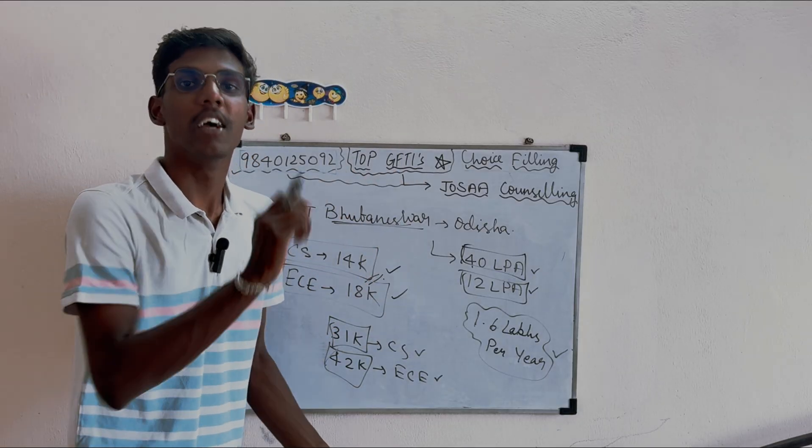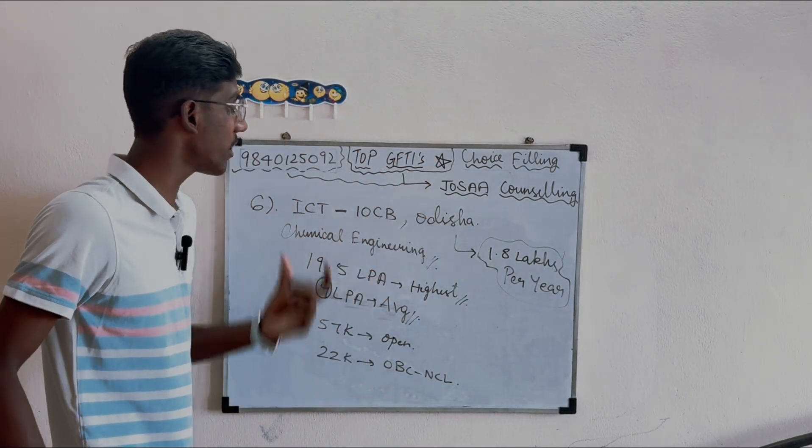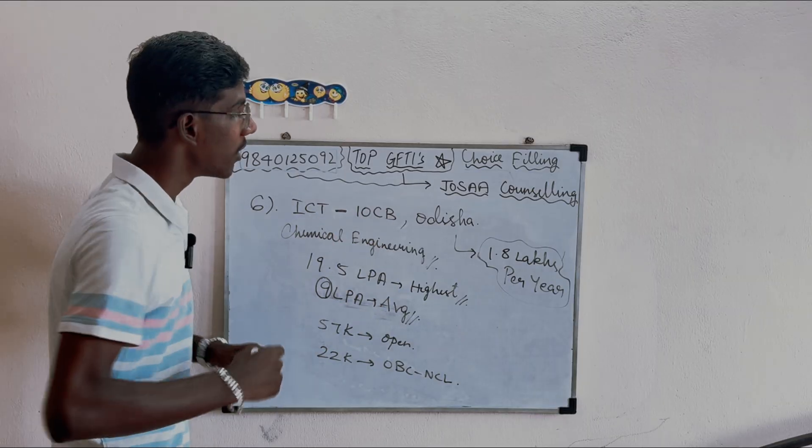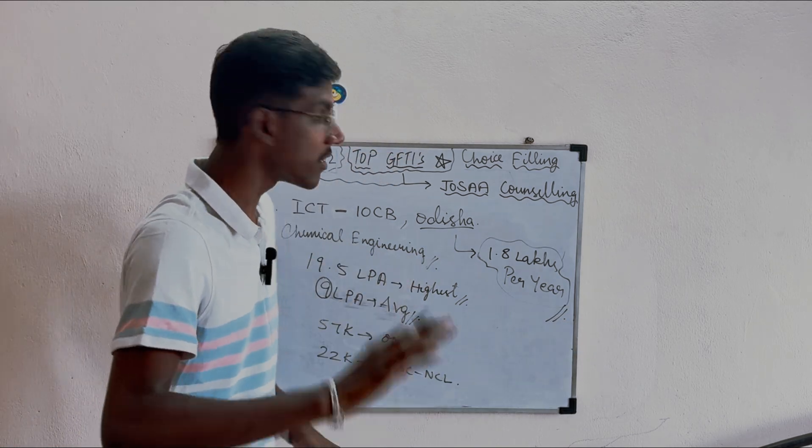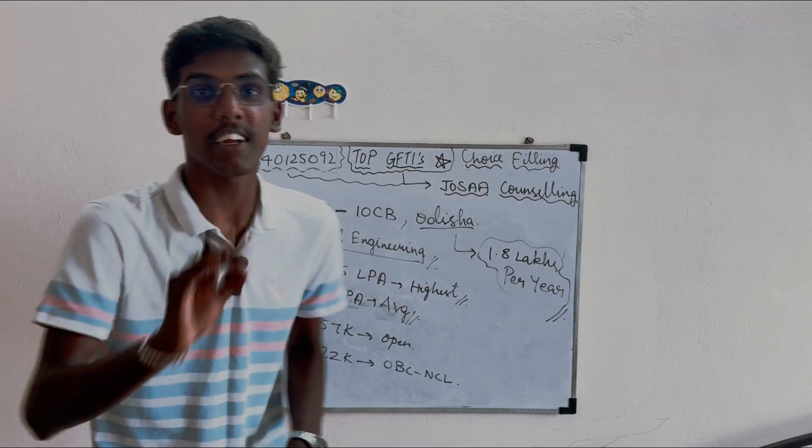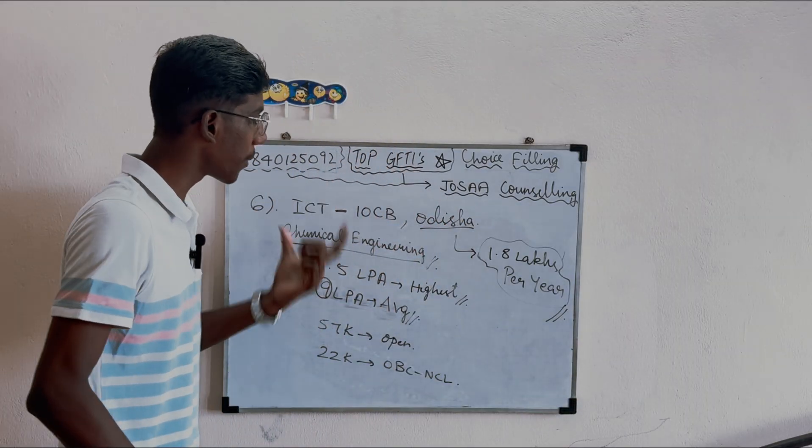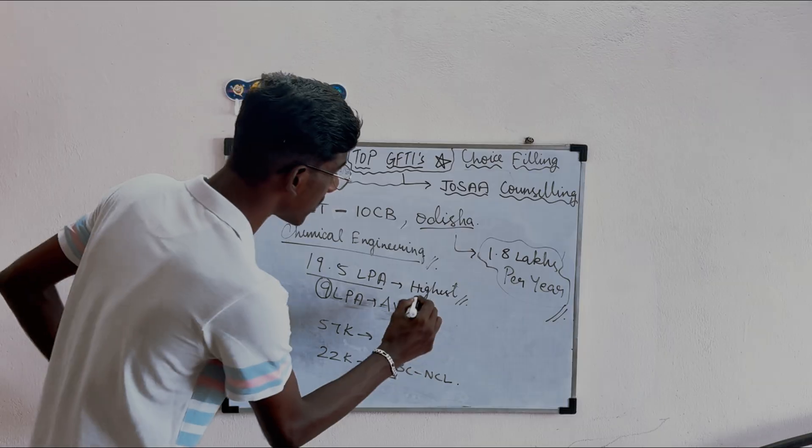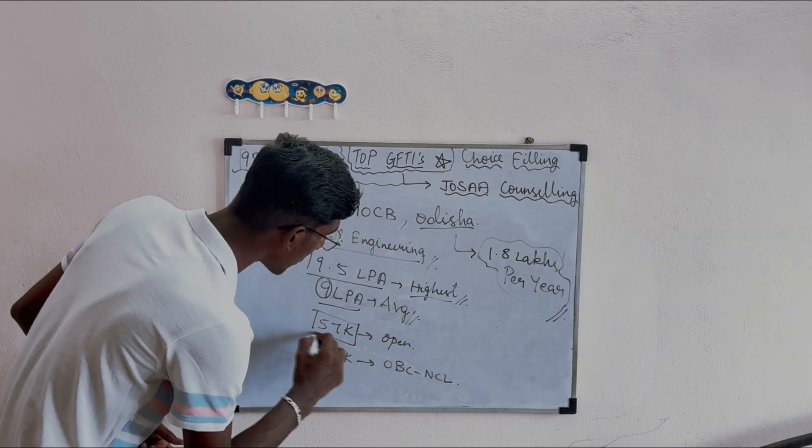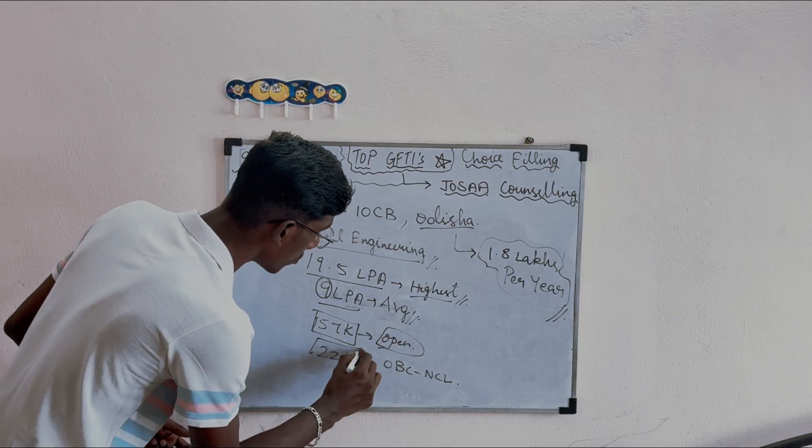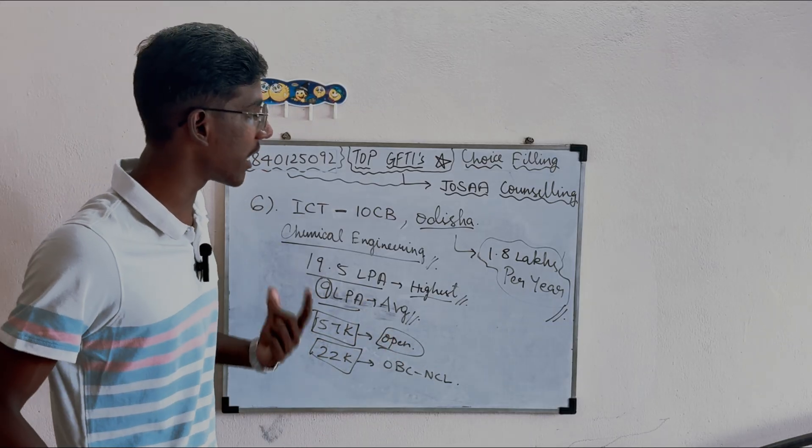Next top GFTI is ICT IOCB - Institute of Chemical Technology, Indian Oil Odisha Campus. Fee is 1.8 lakhs per year for academics and hostel. The course is Chemical Engineering Integrated M.Tech, a 5-year dual degree program. Highest package is 19.5 LPA.